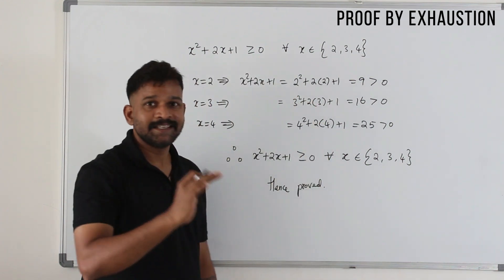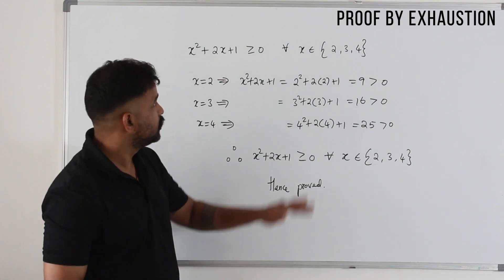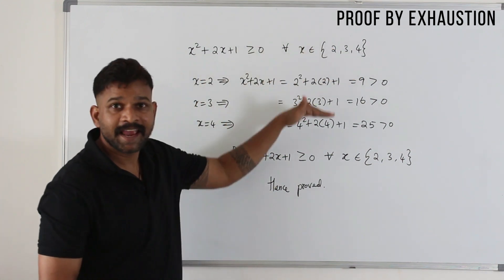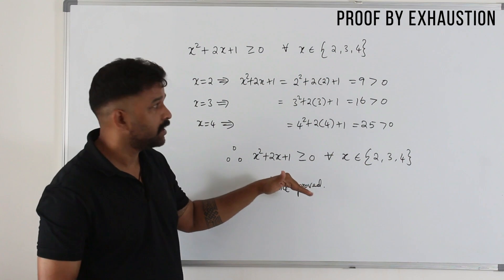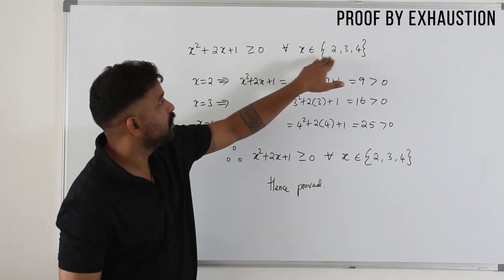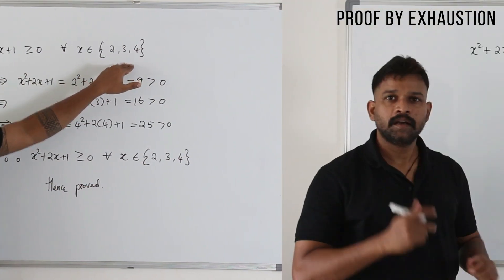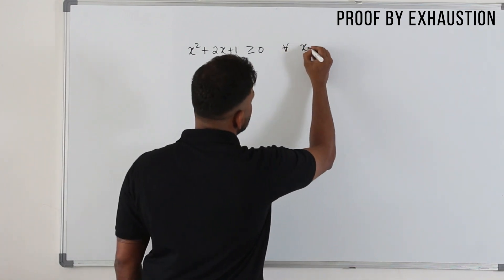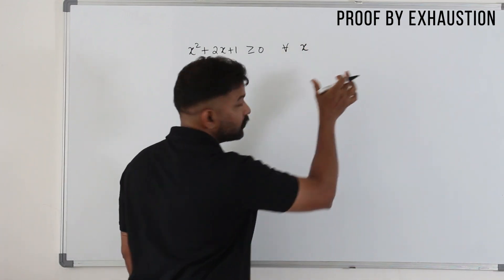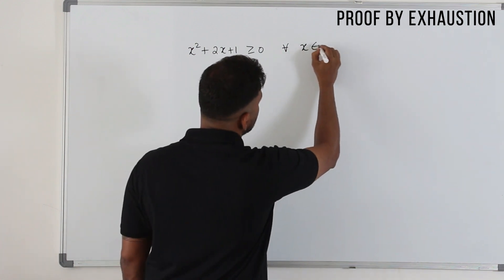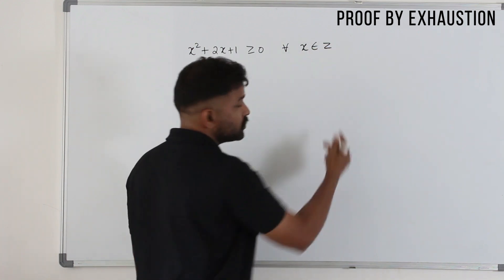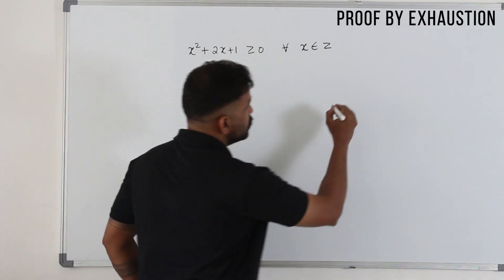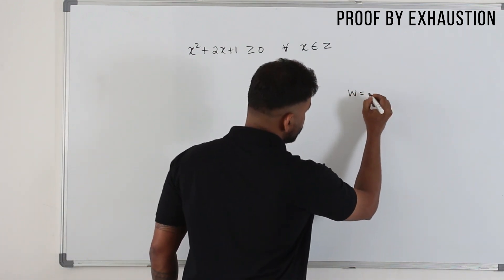So this is proof by exhaustion — you need to prove the statement for each and every case separately. You can do this only when you have a limited number of values. Now, what if x is not a limited set but x belongs to ℤ — the set of all integers? You should know that.